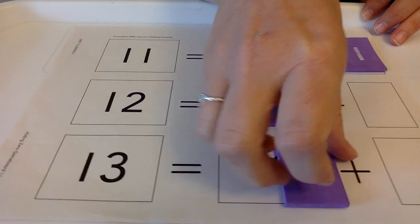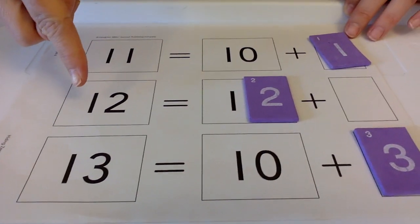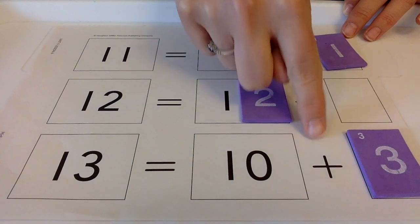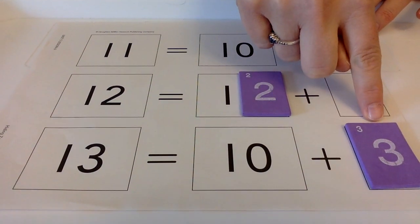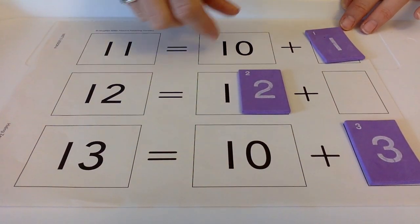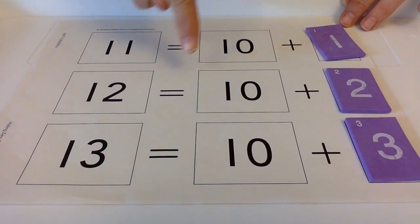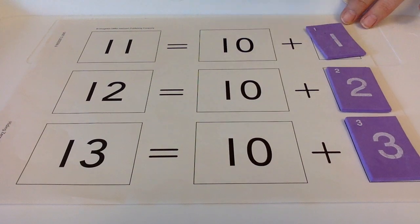Okay, the next one, let's do 13. We're going to move the 3. 13 equals 10 plus 3. And let's do the last one, 12. We're going to move the 2. 12 equals 10 plus 2.